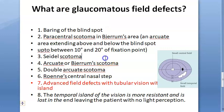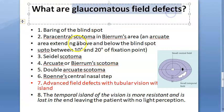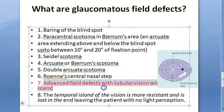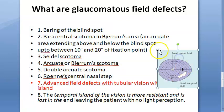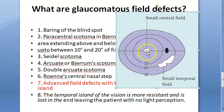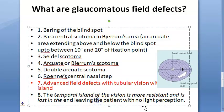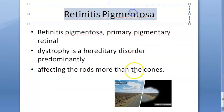In glaucomatous field effects, there are so many scotomas, and everything progresses to advanced field effects with tubular vision — a small central field remains, and a small temporal field can also be there. After this stage, even no light perception can occur.